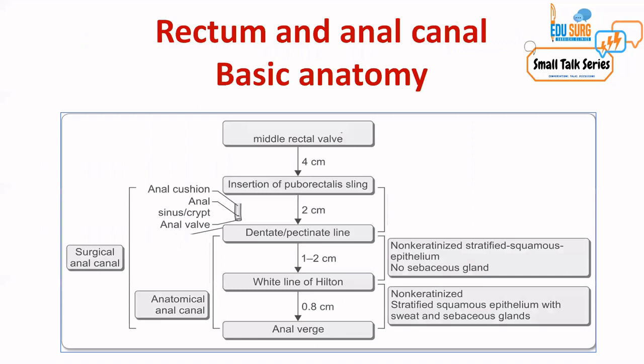This figure will be discussed in more detail when we cover anal canal anatomy. For this video, what is important is the anal verge and where it is. All distances — whether the puborectalis sling, which marks the end of the anal canal and the beginning of the rectum at 4 to 4.5 centimeters from the anal verge, or the dentate line, white line of Hilton — all these landmarks are labeled as distance from the anal verge.